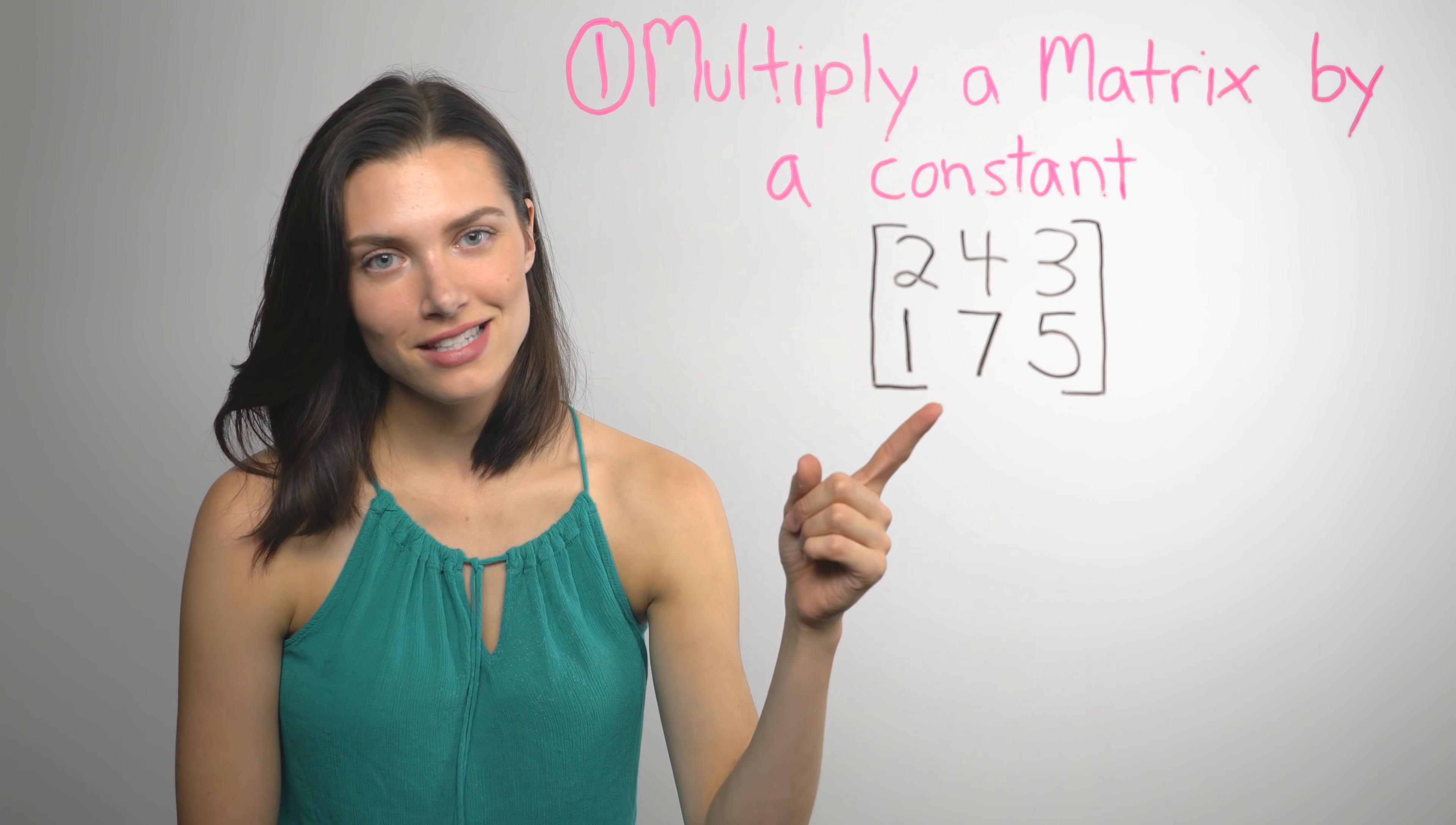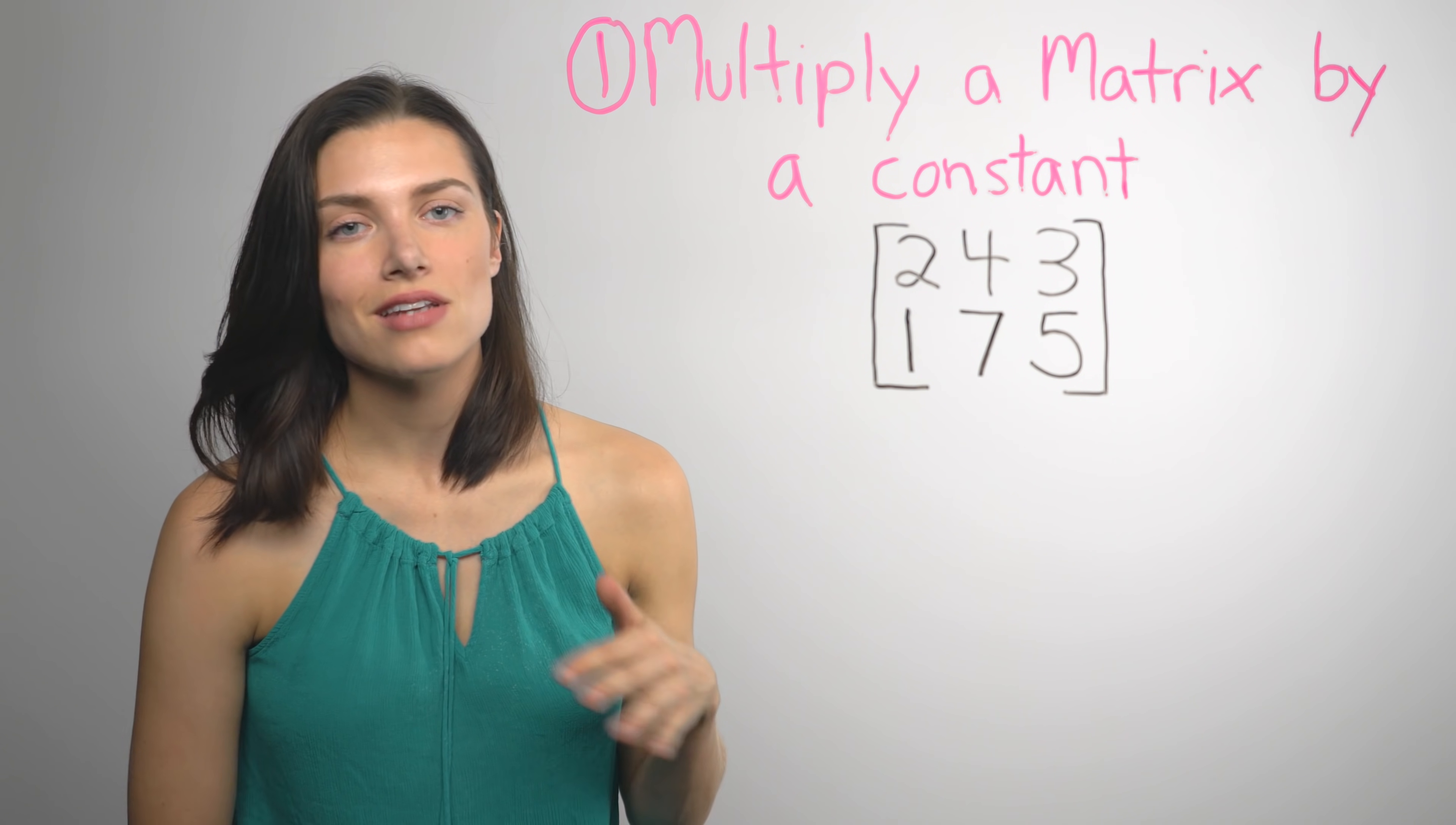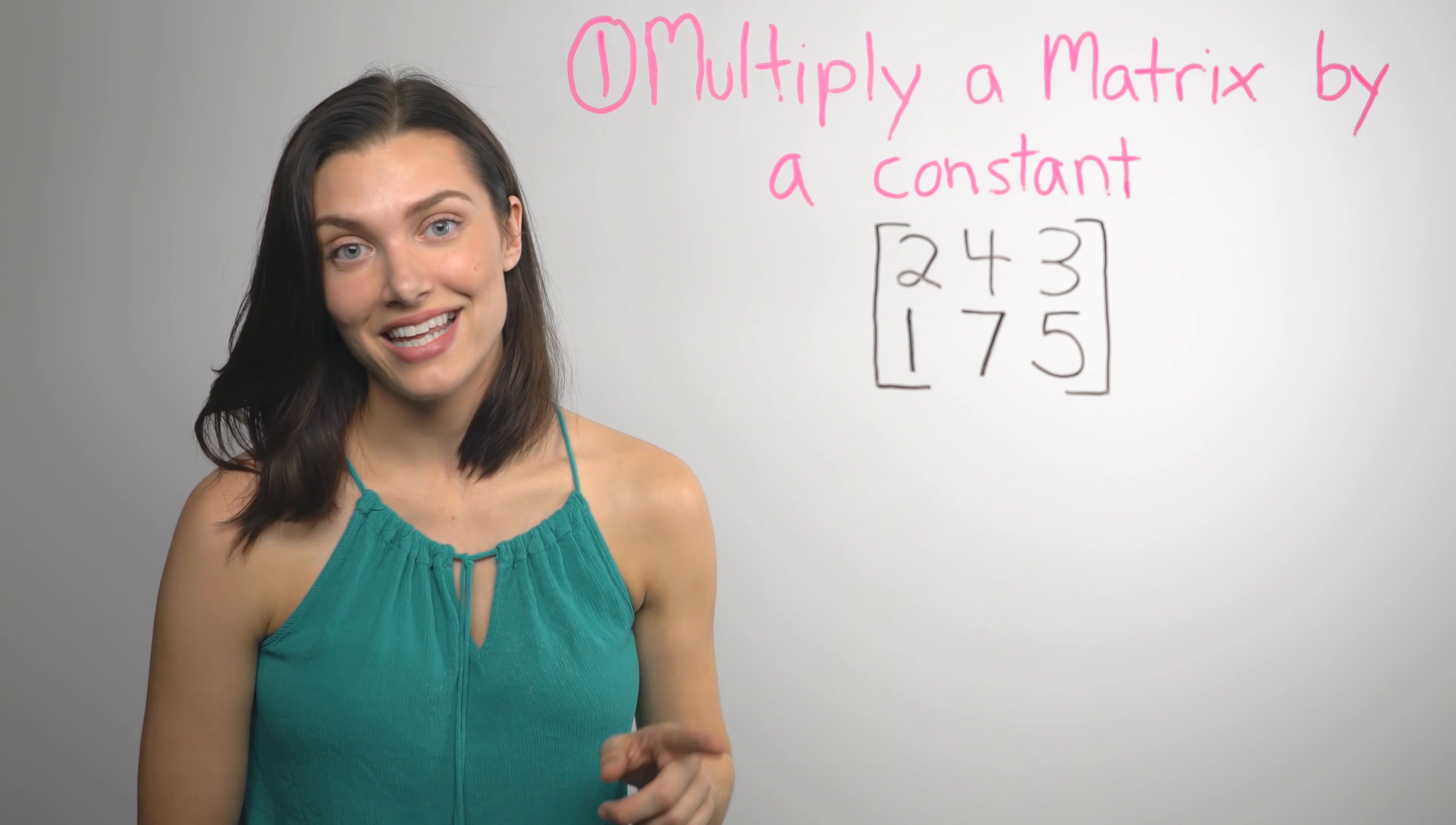So here's a matrix. For other things you can do with matrices, like addition and subtraction, the matrices have to be the same size. But it's not that way with multiplication. The matrices can be two different sizes, or you can multiply a matrix by a constant, like this.